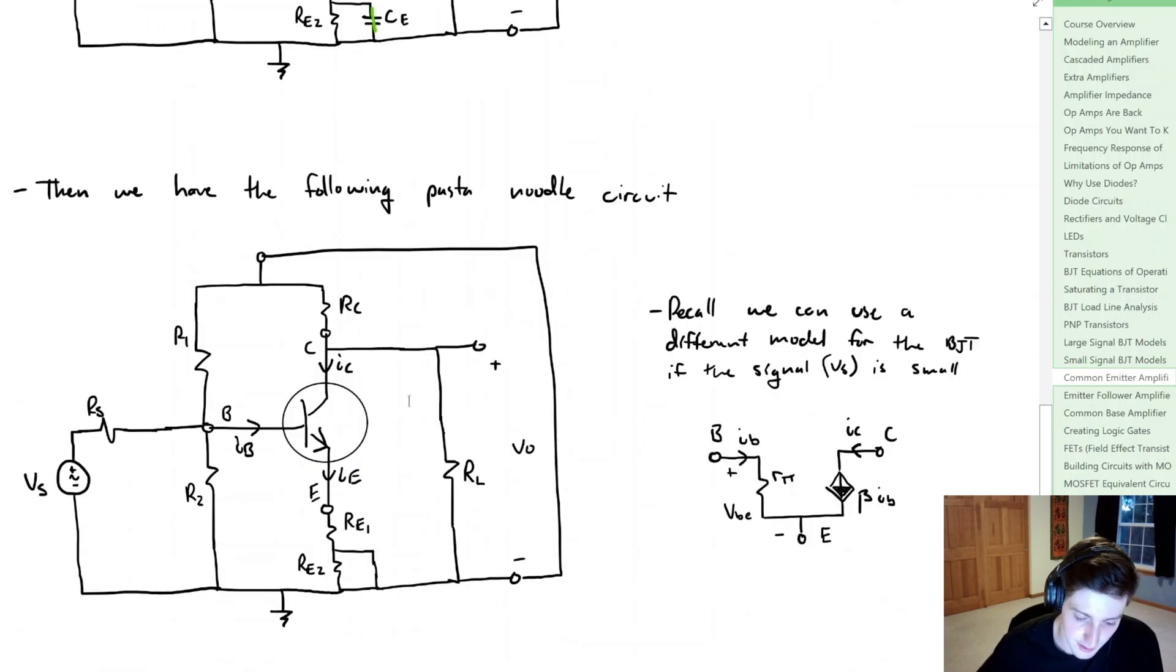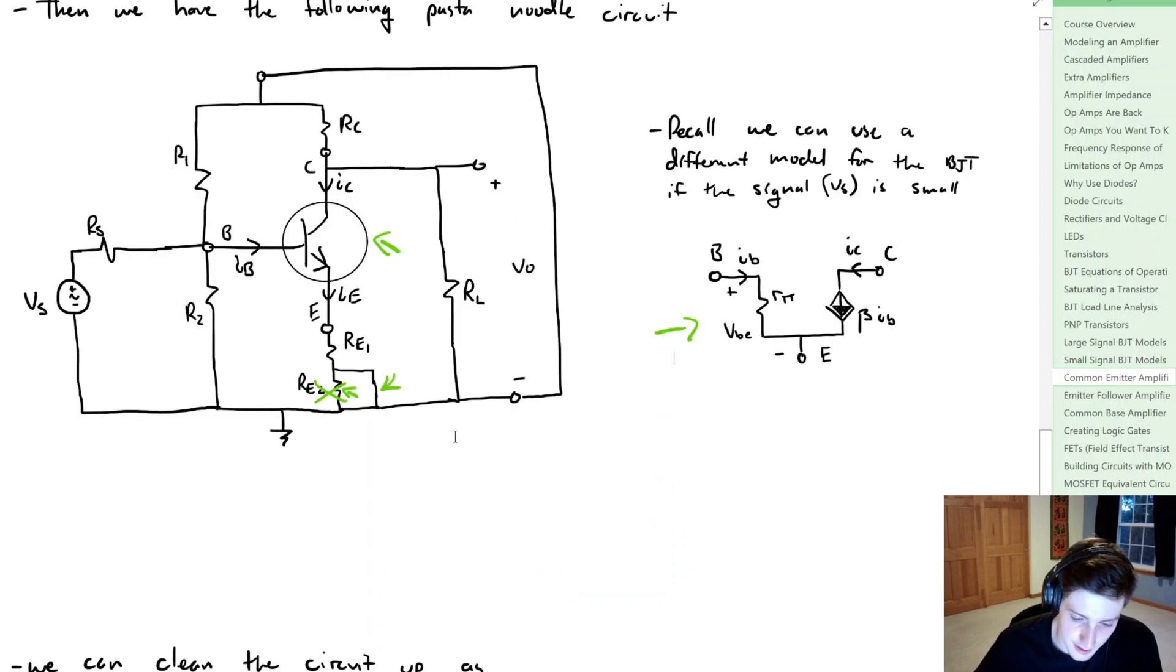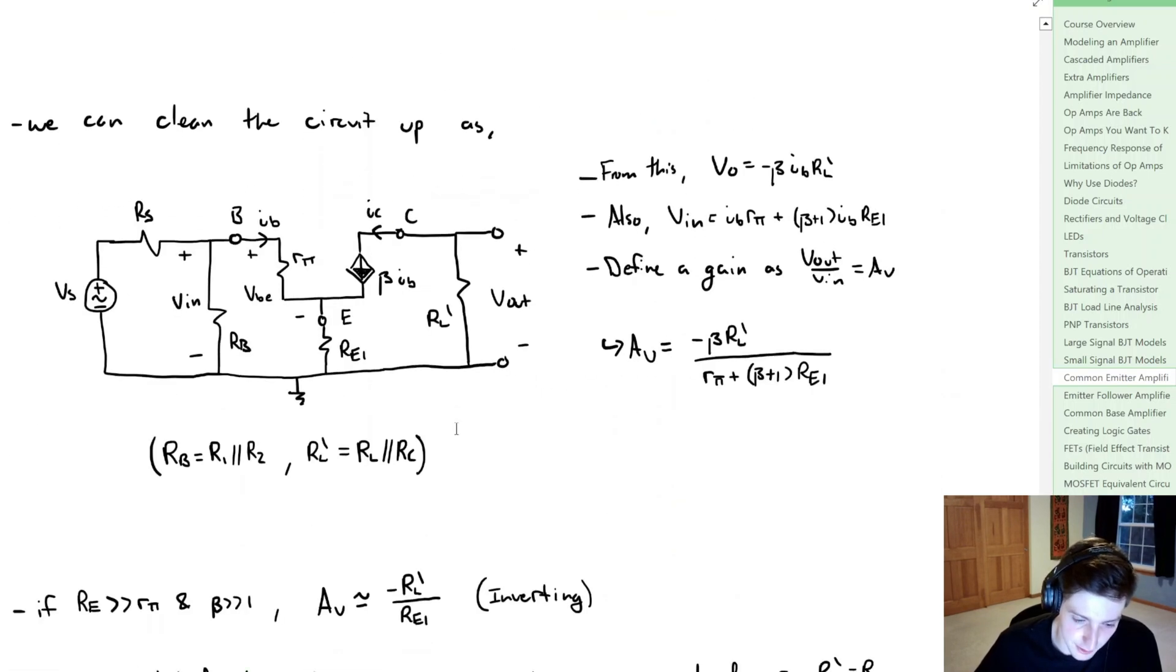Now from that we get the circuit here. Notice that RE2 is in parallel with the short circuit, so we can disregard RE2. And recall that we can represent this NPN as this new small signal model that we've developed the understanding for.